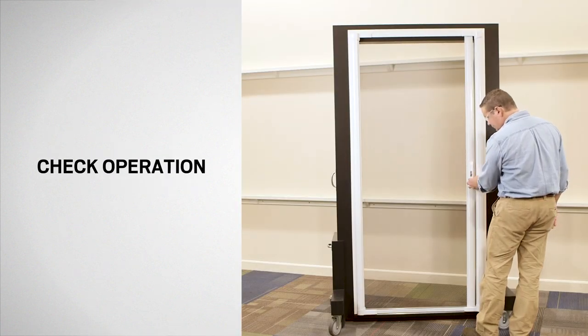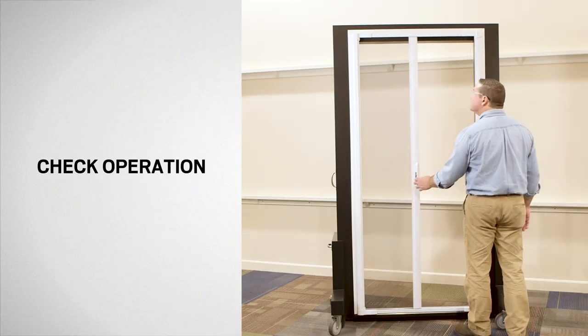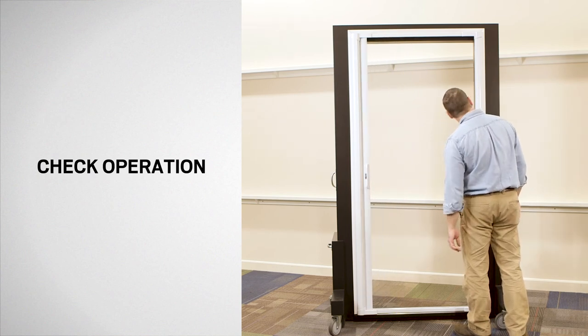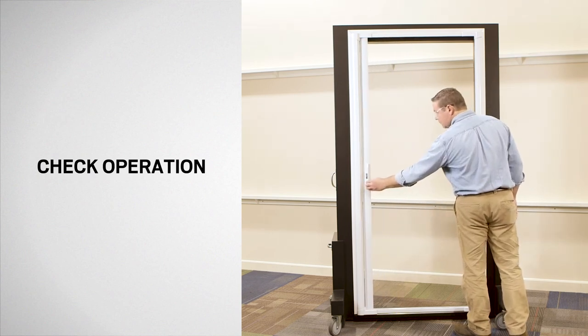Now, check the operation of your door. Slide the release lever up or down to unlatch the insect screen and slowly retract it.